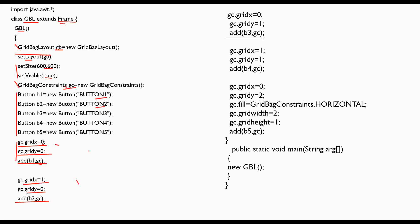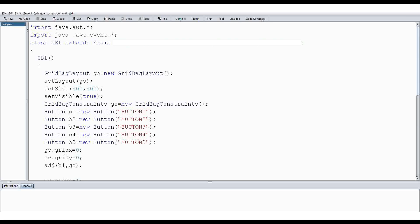Button five is at (0, 2). Here I've used the fill constraint to fill horizontally, and set the value of width as two and height as one. Lastly, I add button five with its constraints. This is the main method of the class.